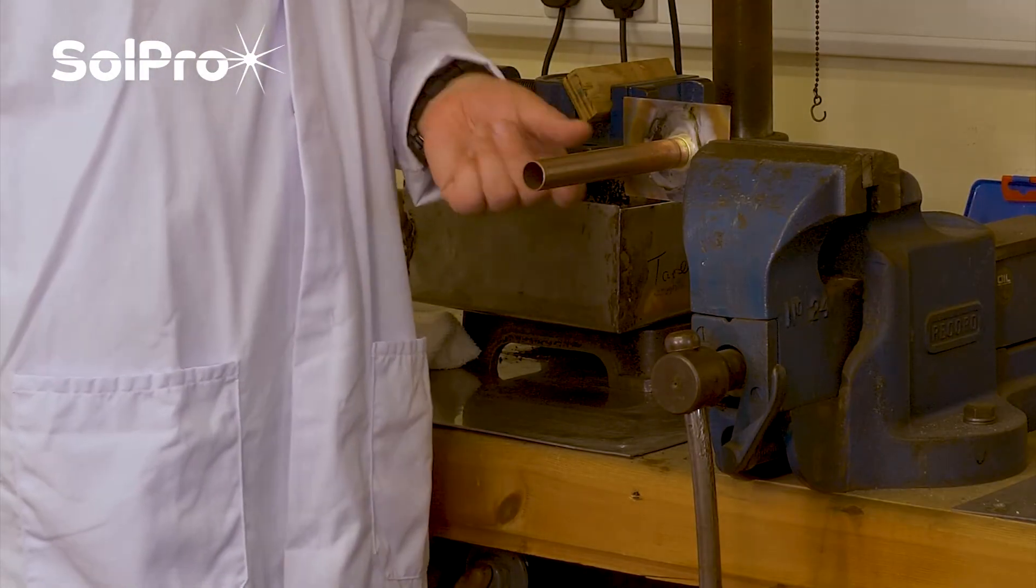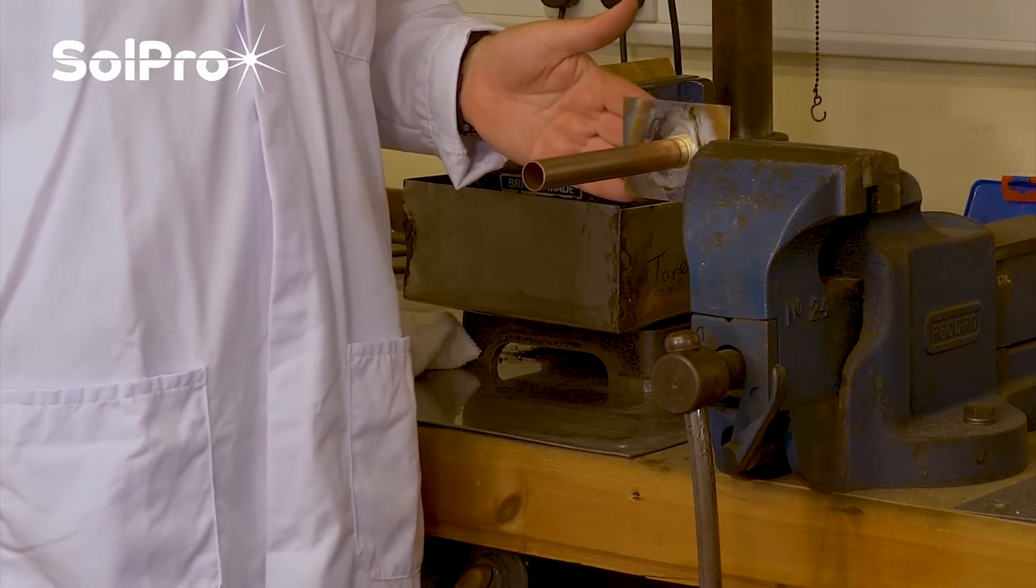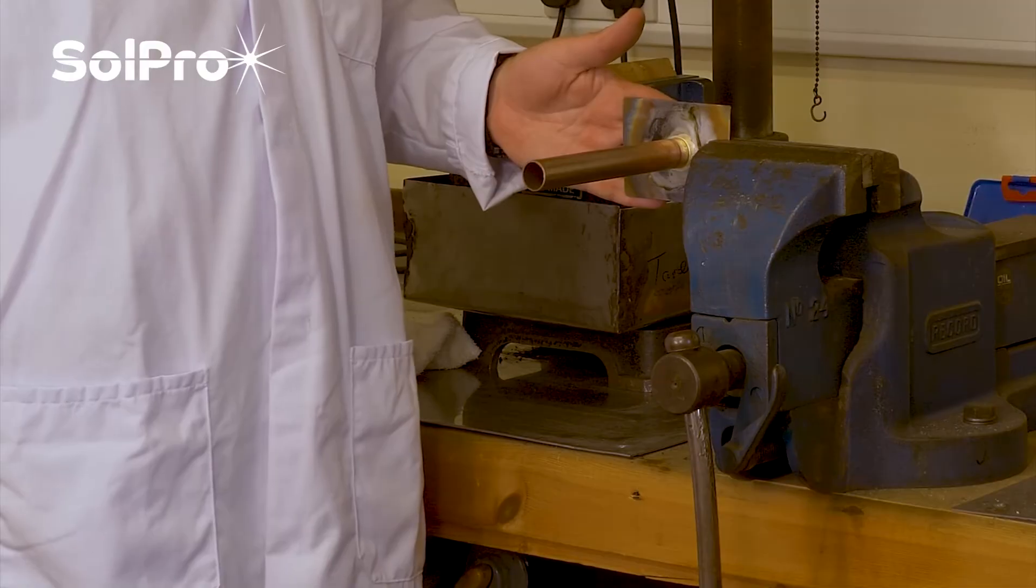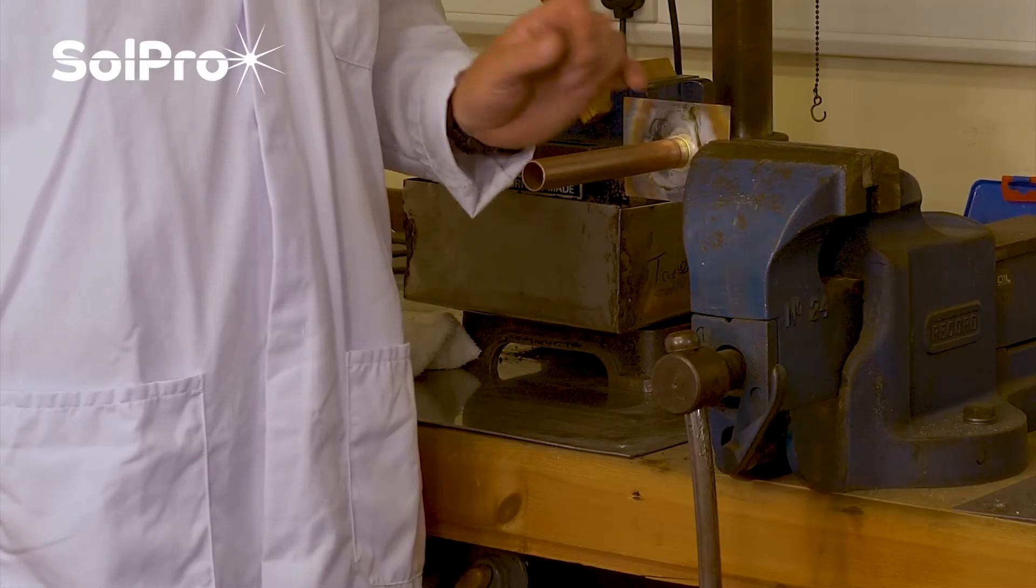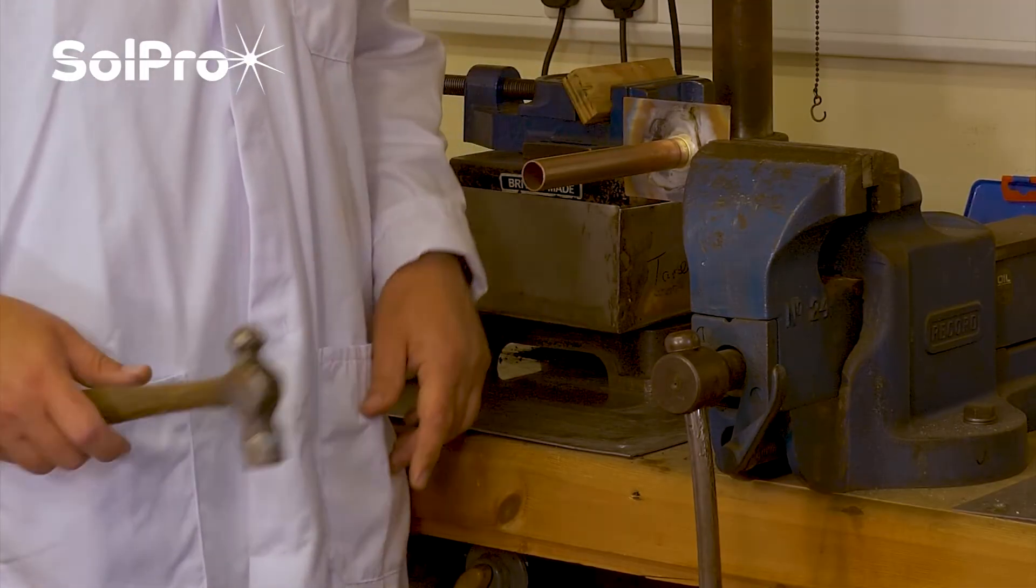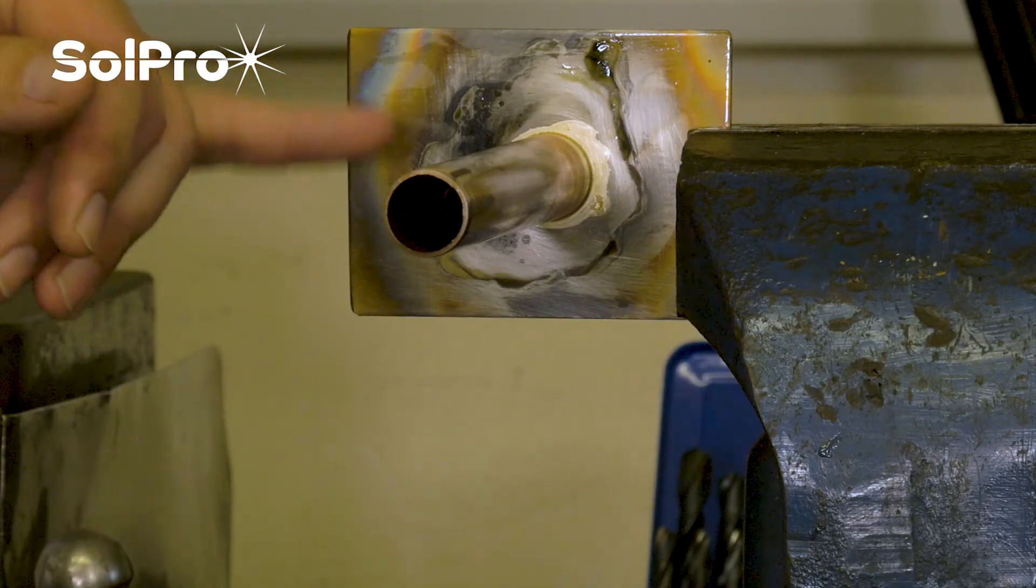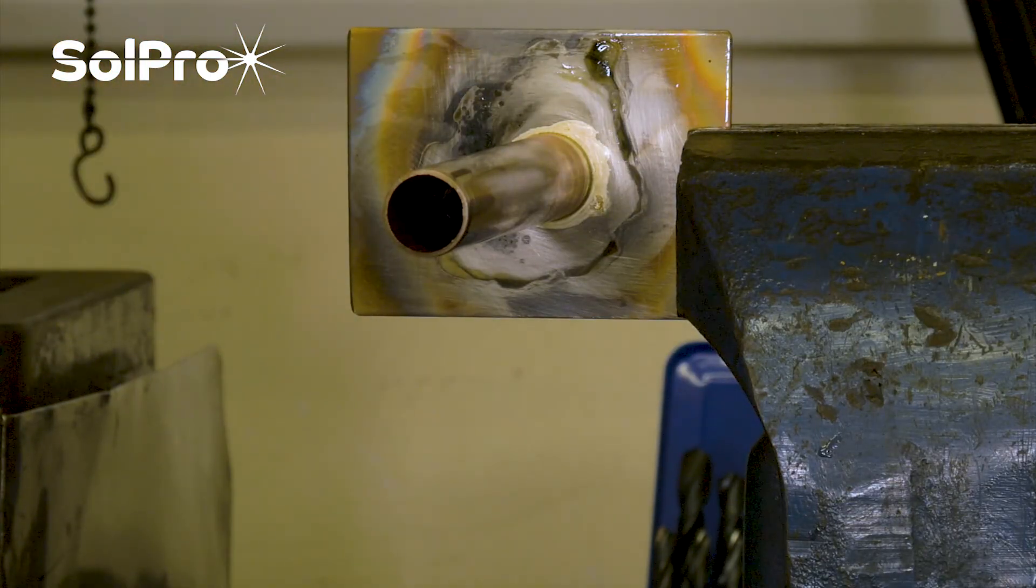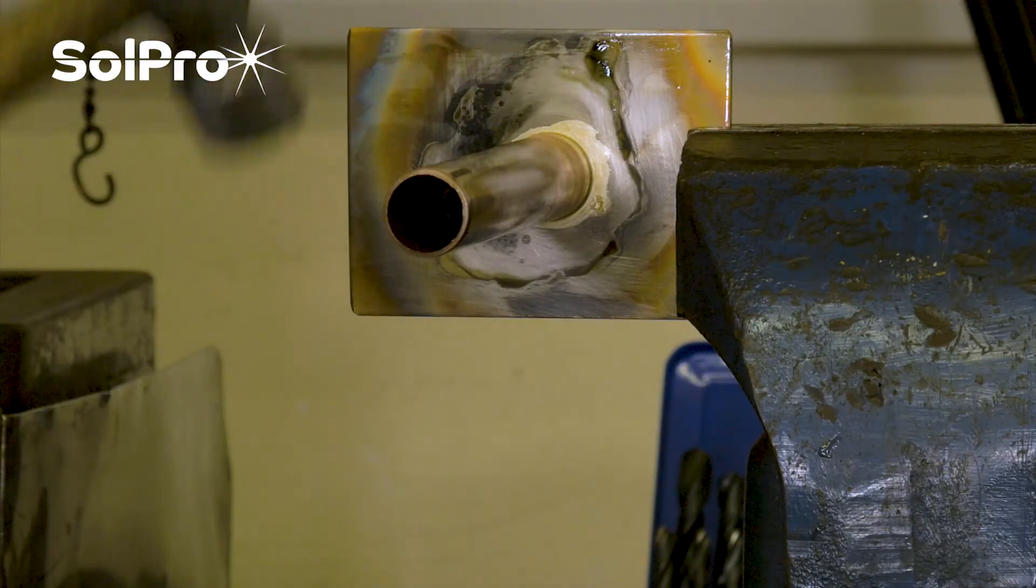Here we've got the copper tube that we brazed with our silver braze 55T brazing alloy to a piece of stainless. The joint should be as strong as the parent metal and in some cases stronger, so we're going to give it a bit of a test.